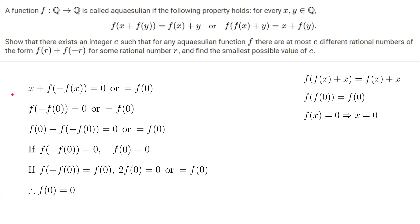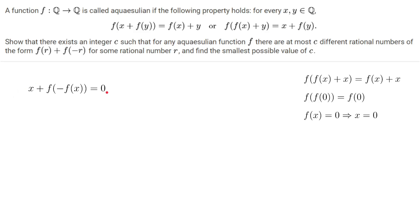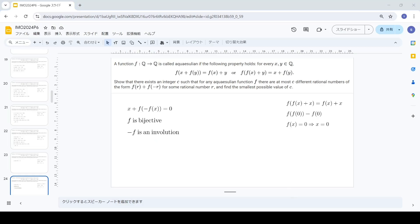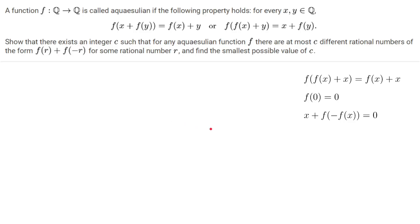Using this, the equation simplifies a lot. Therefore, x + f(-f(x)) = 0, and therefore f is bijective and -x is an involution. Now we have a very useful fact: x + f(-f(x)) = 0. Now look at this equation — it claims that for every x, f(x) + x is a fixed point of f. This looks very strong, so we're going to try to find some properties about fixed points of f.